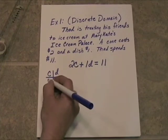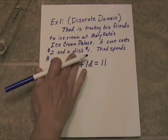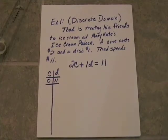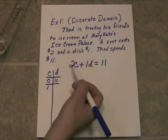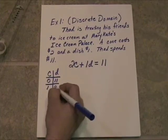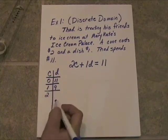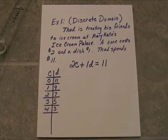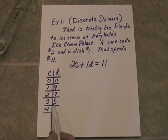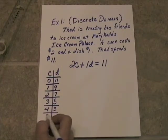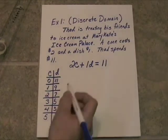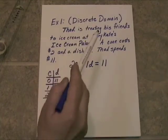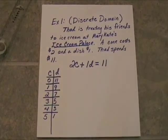If he didn't buy any cones, he would have to spend all $11 on dishes, so (0, 11) is a solution. If he bought one cone, that takes away $2, leaving $9 for dishes. Two cones takes away $4, leaving $7 for dishes. Three cones leaves $5 for dishes. Four cones takes away $8, leaving $3. Five cones costs $10, leaving only $1 for dishes. These are the only combinations that can possibly work at the ice cream palace for $11 buying cones and dishes.